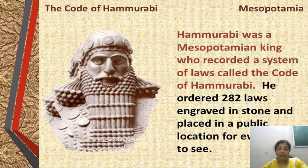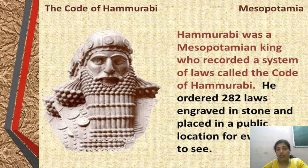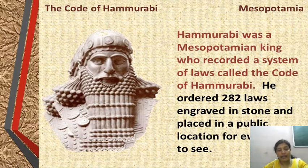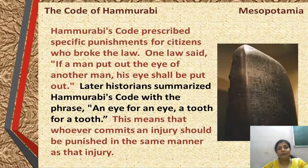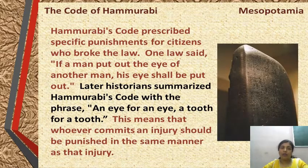Hammurabi was a Mesopotamian king, very famous and known for his code of laws. He ordered 282 laws engraved in stone and placed in a public location for everyone to see — that was his code of laws.